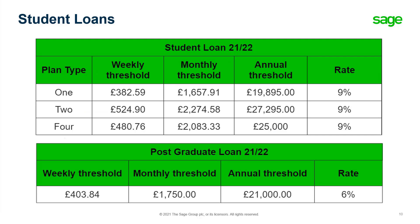Then we have the update for student loans. There is a new plan in place — Plan 4 is the new Scottish band. Before we move on to preparation for the year end: the employment allowance is unchanged from the new rules last year, with the reclaim staying at £4,000. Access is restricted to employers with a National Insurance Contribution bill below £100,000 in the previous tax year, and this must be applied for each year. Lastly, the attachment of earnings is unchanged.